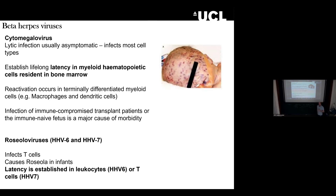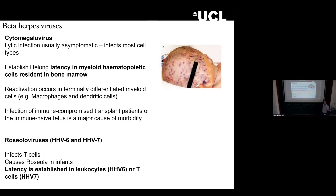When CMV reactivates, the trigger is when our bone marrow cells turn into immune cells to populate our blood. The CD34 bone marrow cells give rise to all our immune cells — T cells, B cells, NK cells, macrophages, monocytes, dendritic cells. This happens on a daily basis. If CD34 cells are leaving the bone marrow, the virus can leave with them into those mature cells. This is asymptomatic in healthy people, but in immune-compromised or transplant populations it's a real problem — this is why I work at the Royal Free Hospital in London, one of the major transplant centers.